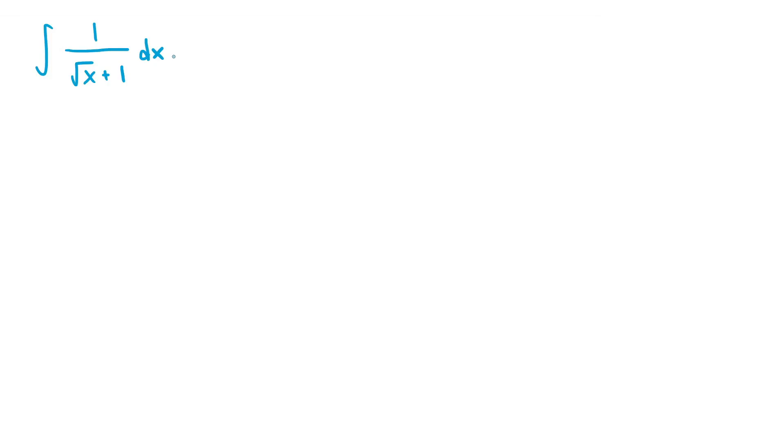To integrate 1 over the square root of x plus 1, we need to do a rationalizing substitution. The integrand is not a rational function since it has a square root of x term which is a non-integer exponent. So we would like to transform this into a rational function in terms of u by doing a substitution.